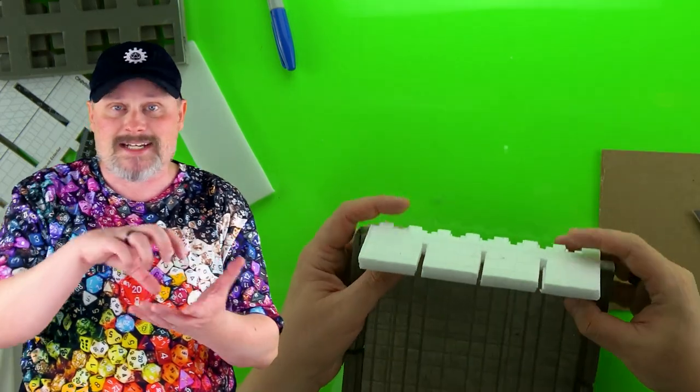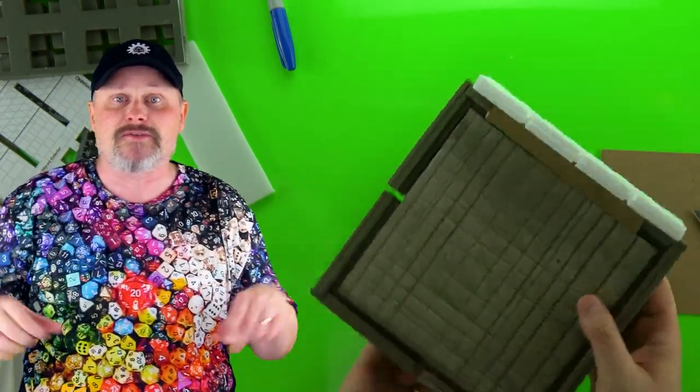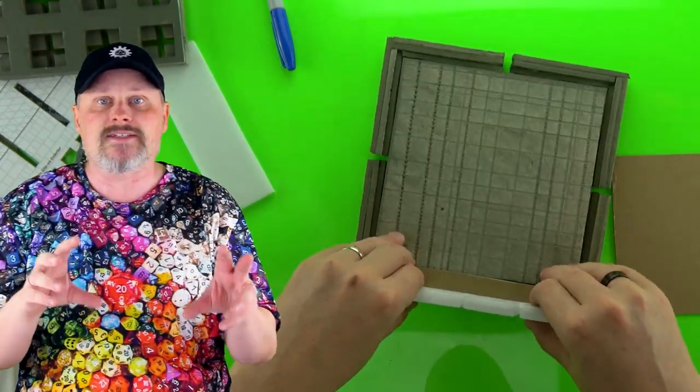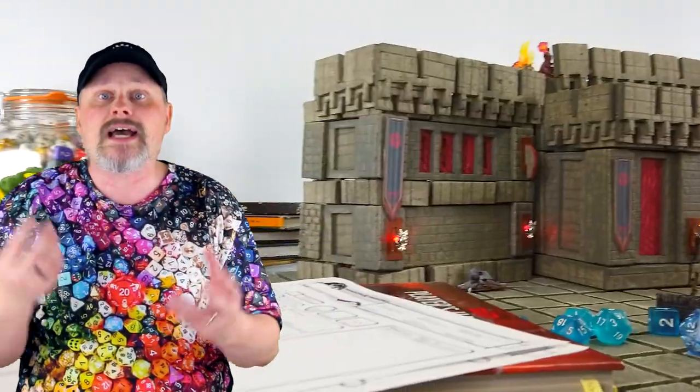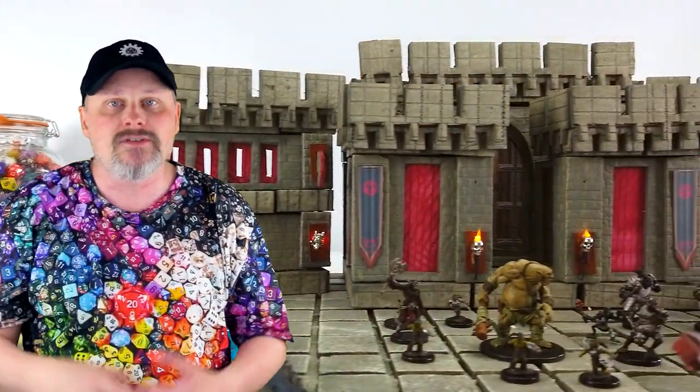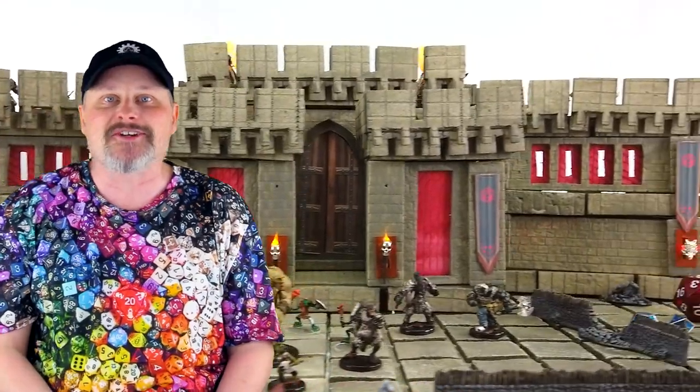Clip-ons are items that clip onto the borders of grid tiles. This can be things like crenellations, which we're going to be making in this video, or like a railing or a half-height wall. Basically anything you want to have attached to the border of a grid tile, you can make with clip-ons. So let's get started.